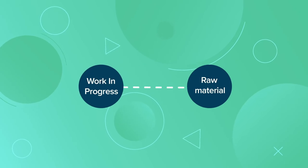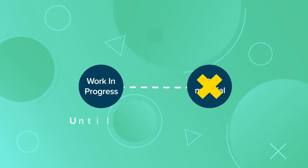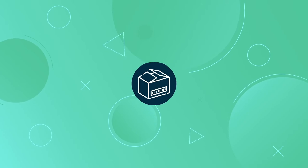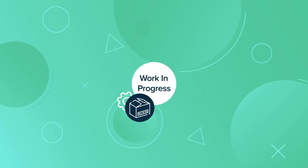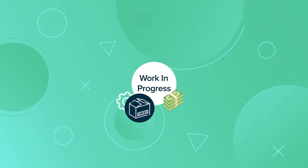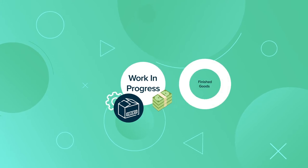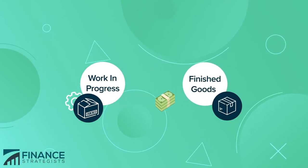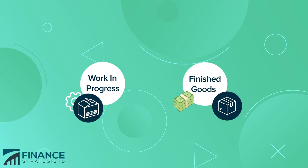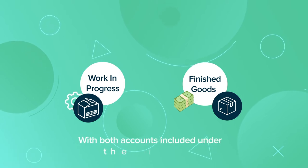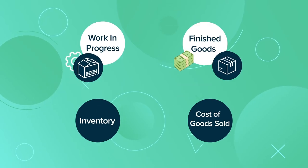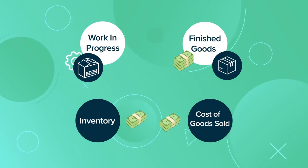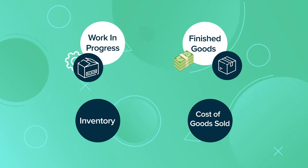Raw material is not included in WIP until it moves onto the production floor. When a product is being manufactured and products are only partially completed, costs are posted to WIP. When the items are finished, the costs are moved from WIP to finished goods, with both accounts included under the inventory account. Costs are moved from inventory to cost of goods sold when the items are eventually sold.